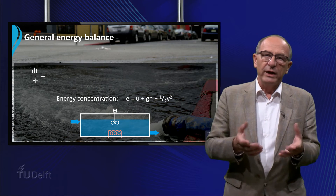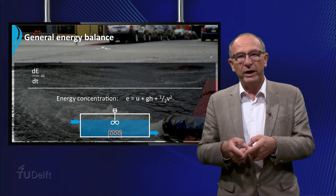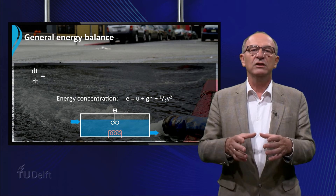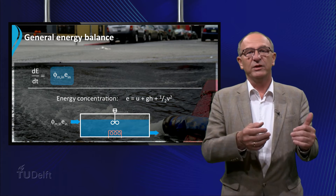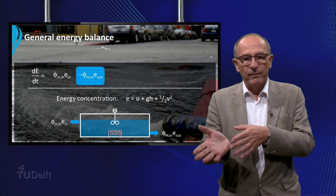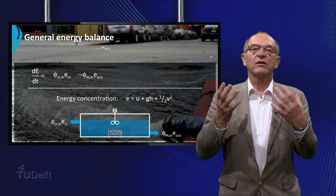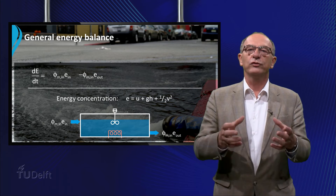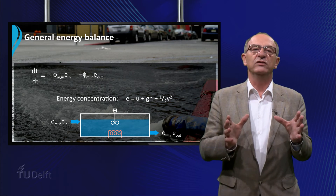If we multiply this energy concentration with the mass flow rate, we obtain the amount of energy which flows into the volume, and in a similar way we obtain the amount which leaves the volume. However, this is only a part of the total balance, because we also have to take a few other energies into account.